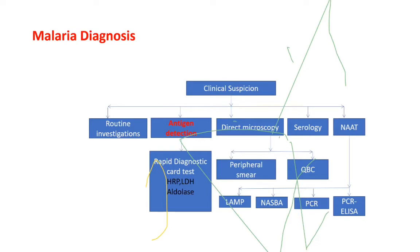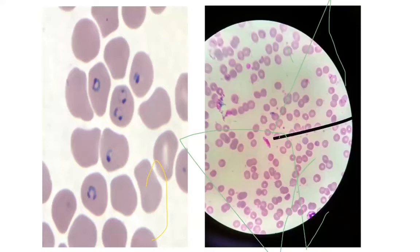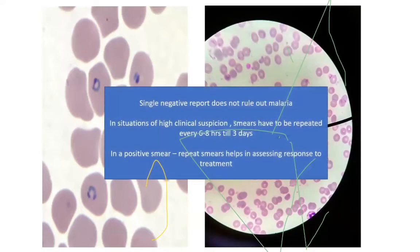Diagnostics for malaria include, apart from routine investigation, direct microscopy of peripheral blood smear or by quantitative buffy coat (QBC), antigen detection via rapid card test or ICT-based platforms, and nucleic acid amplification test. Direct microscopy helps in diagnosis of mixed infections by speciation of plasmodium, determines level of parasitemia, and monitors therapeutic response. Importantly, a single negative report does not rule out malaria; in situations of very high clinical suspicion, smears have to be repeated every 6-8 hours for up to 3 days.